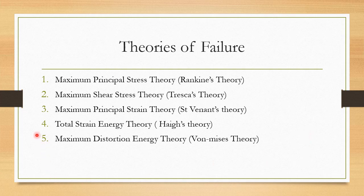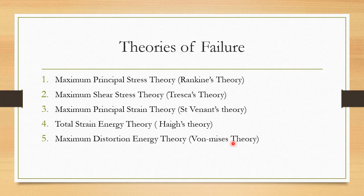Theory number five — the maximum distortion energy theory — is the most widely used. In all finite element tools, whether it's Abaqus, Nastran, or Altair, people like to use a fringe component of this particular entity. I'll talk about this in the next couple of minutes and explain why it is more important compared to the other four.